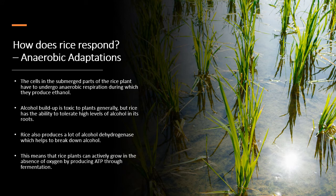In terms of anaerobic respiration, rice plants — because their roots are submerged underwater — typically don't get enough oxygen to carry out aerobic respiration, so they undergo anaerobic respiration. In this case, they produce ethanol. Normally, ethanol is toxic to plant cells, but rice has the ability to tolerate really high levels of ethanol in its roots. It also produces a lot of alcohol dehydrogenase, which helps to break down the ethanol. This means that rice can actively grow in the absence of oxygen by going through anaerobic respiration.